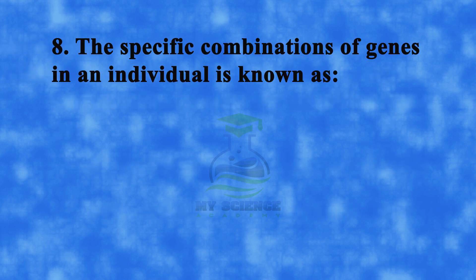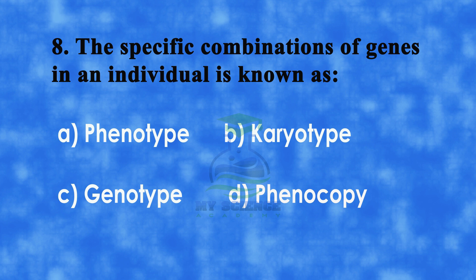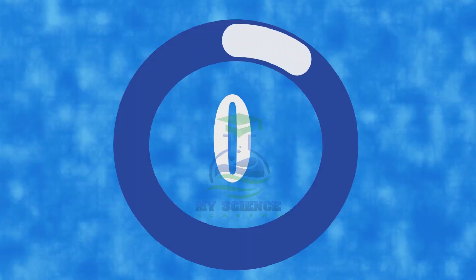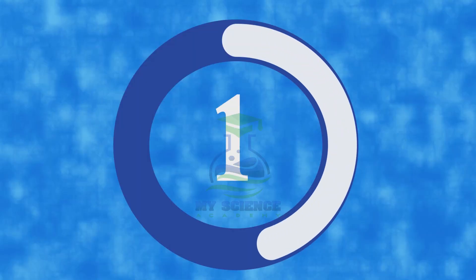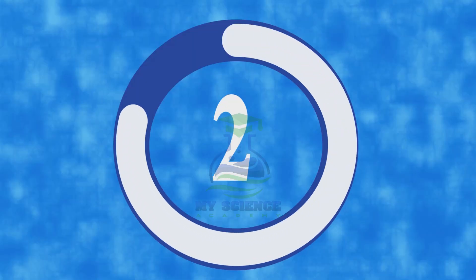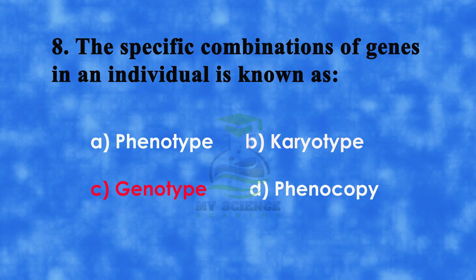Question 8: The specific combination of genes in an individual is known as — A. Phenotype, B. Karyotype, C. Genotype, or D. Phenocopy. Correct answer is C. Genotype.